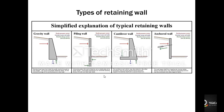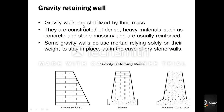Retaining walls are classified into four types: the first is the gravity wall, the second is the piling wall, the third is the cantilever wall, and the fourth is the anchored wall. Gravity retaining walls are stabilized by their own mass and are constructed with dense or heavy materials such as concrete and stone. Some gravity retaining walls use mortar, and in some cases dry stone can also be used.